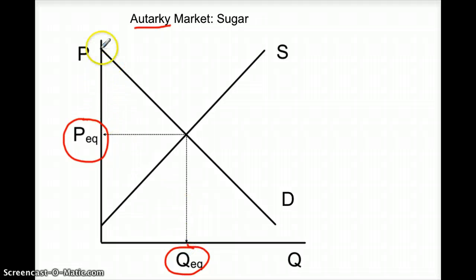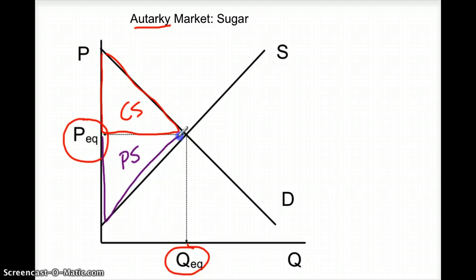So you should be able to identify this triangle right here as the area of consumer surplus and this area down here as the area of producer surplus. So those are our starting points. And if this is a perfectly competitive market, we would say that it's allocatively efficient. But I'm going to erase those for a moment so we can see what happens if this market is actually open to trade.